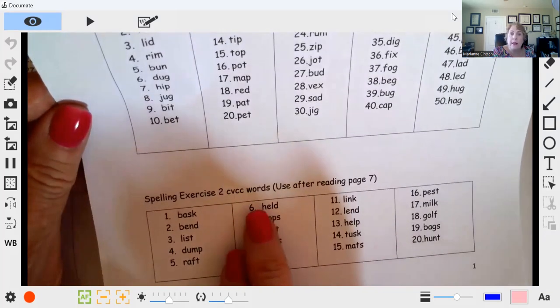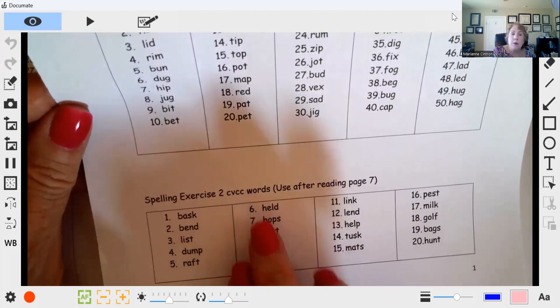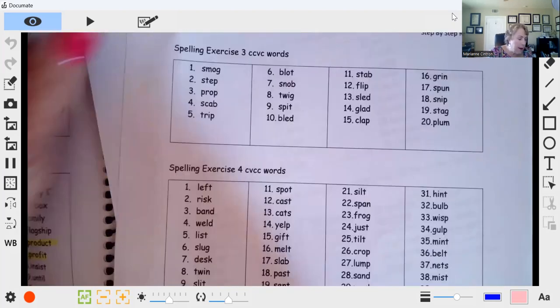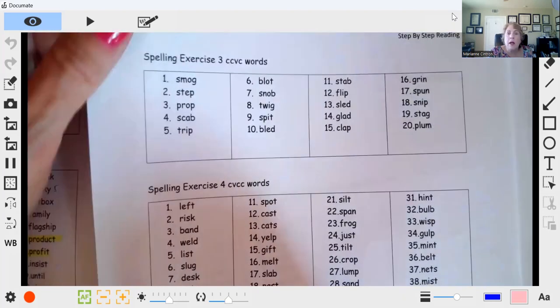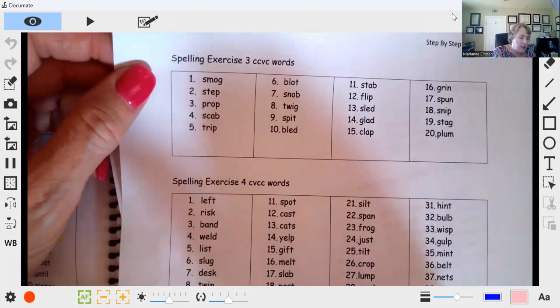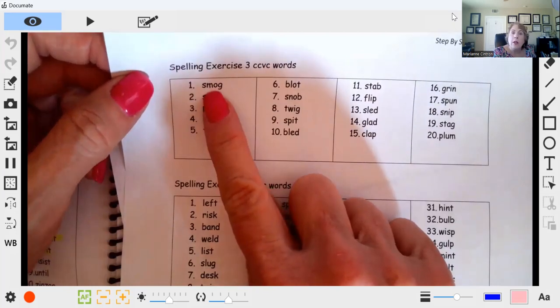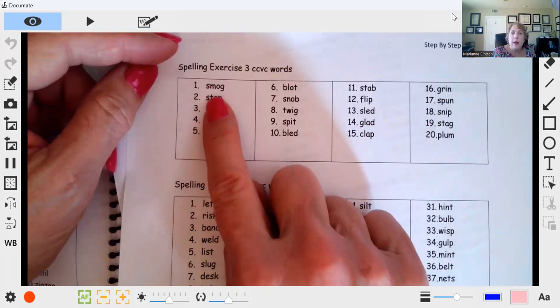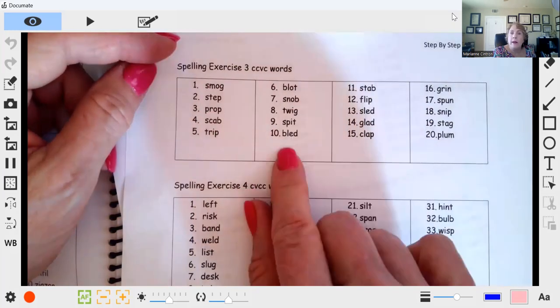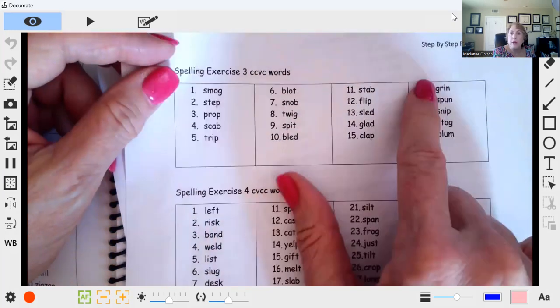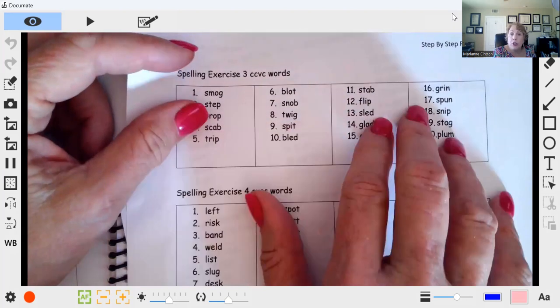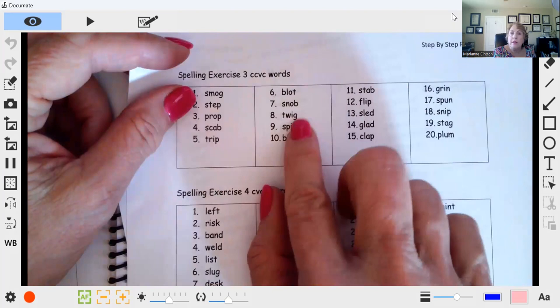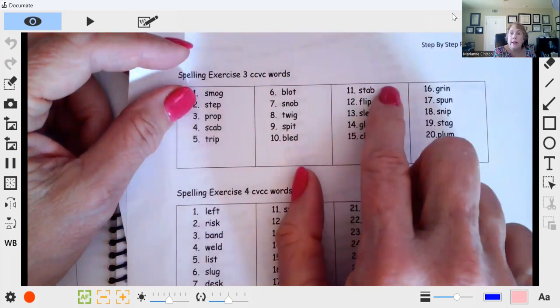Then exercise three, we have a CCVC, which is consonant. CC stands for consonant, consonant, which is our consonant team. Have them write the consonant teams they hear at the beginning of each set. Then day two, have them write the ending that they hear, starting with the vowel and the ending sound.